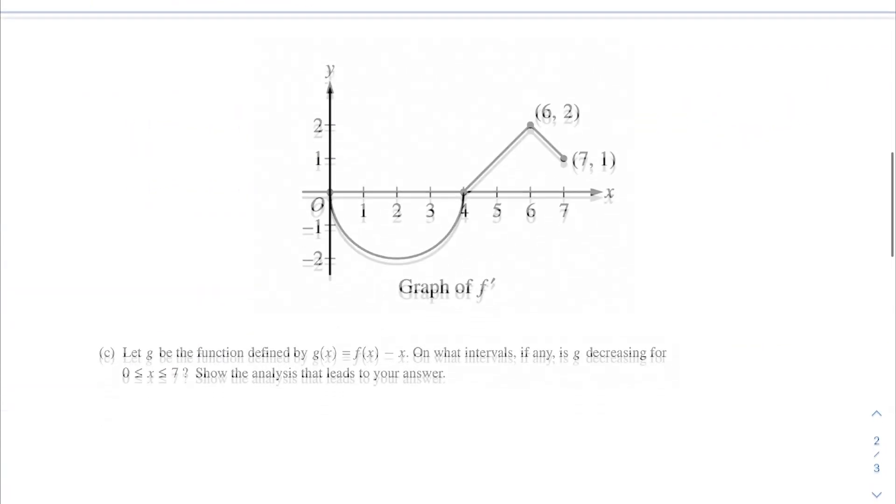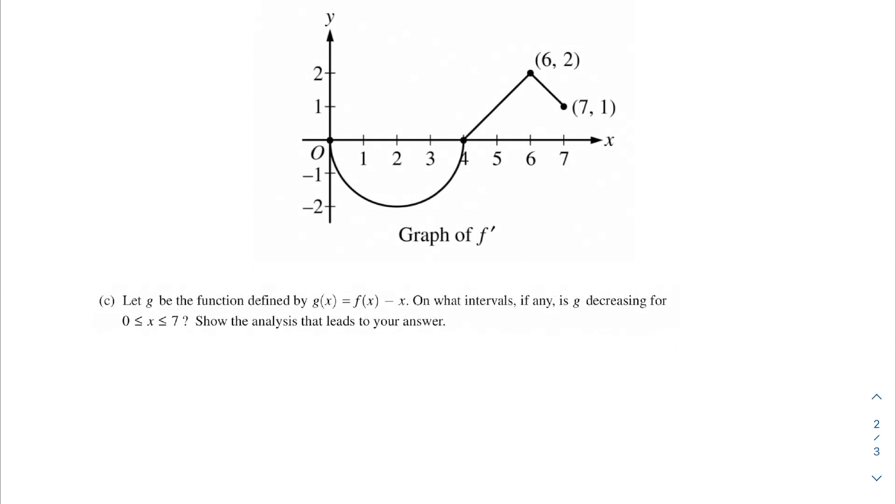So we would say f has an inflection point at x = 2 and x = 6 because f''(x) = 0 or undefined at those points and changes sides. Next problem: Let g be the function defined by g(x) = f(x) - x. On what intervals, if any, is g decreasing for 0 < x < 7? Show the analysis that leads to your answer.